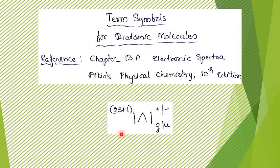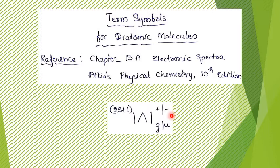This complete term symbol for a diatomic molecule has four components: 2S+1, then Lambda, then G or U as a subscript, and then plus or minus as a superscript. Whether it is G or U, or plus or minus, depends on the molecule. When we see examples we will get to know. We shall look at all four aspects: 2S+1, Lambda, G/U, and plus or minus.